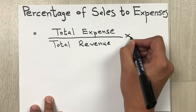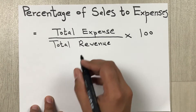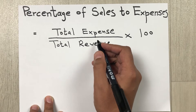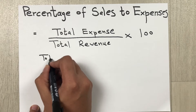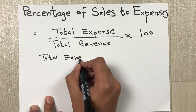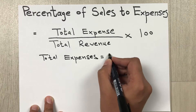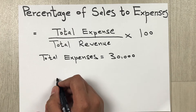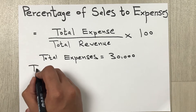multiplied by 100. So let's say the total expenses are 30,000 and the total revenue is 65,000.